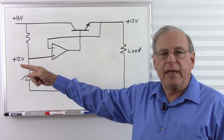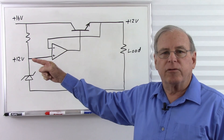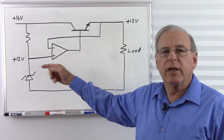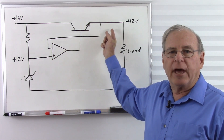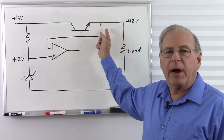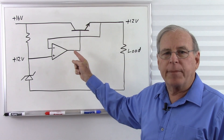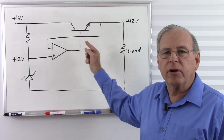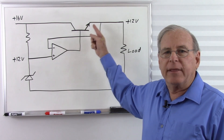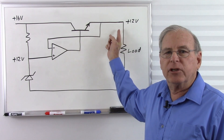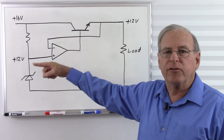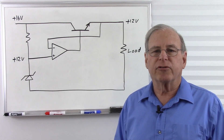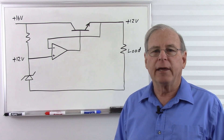The non-inverting input goes to the cathode of this Zener diode, which is at 12 volts. The inverting input is monitoring the output voltage of the power supply. The op amp will make its output voltage — which goes to the base of this transistor — whatever it takes to make the output voltage equal to this voltage. So we have an output of 12 volts.